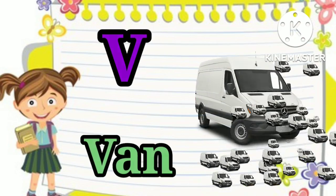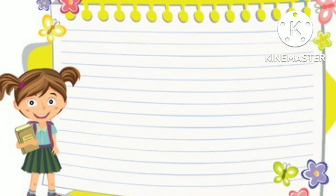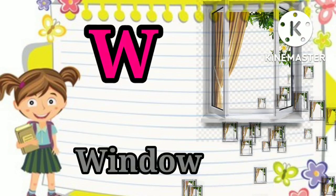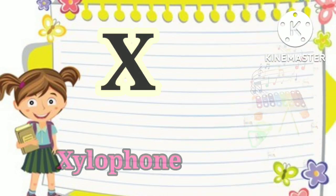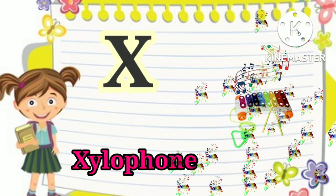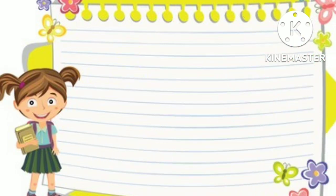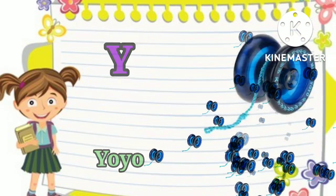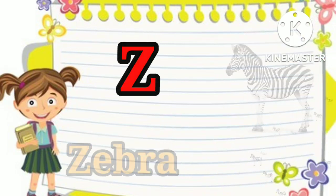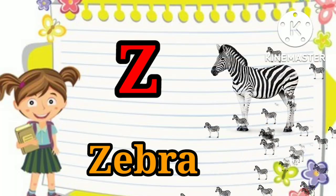V for van, W for window, X for xylophone, Y for yo-yo, Z for zebra.